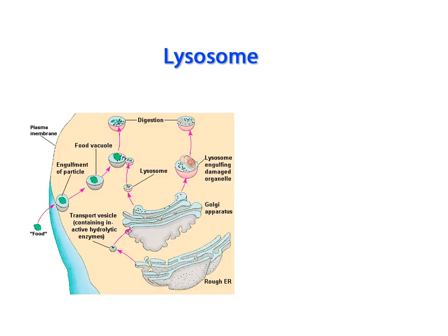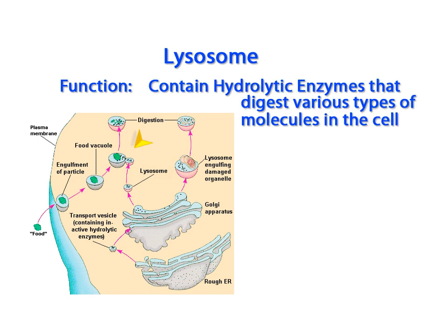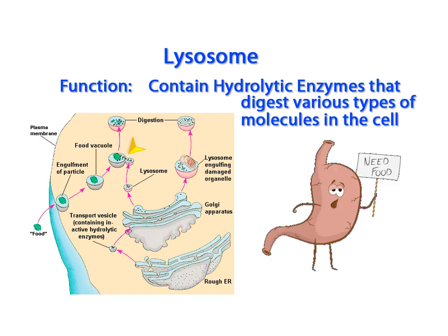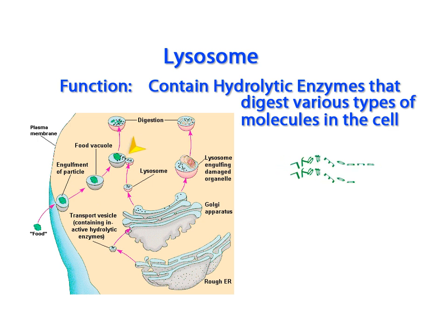If a vacuole is storing nutrients, it may fuse with an organelle called a lysosome, so the contents of the vacuole can be digested. Lysosomes are specialized organelles that contain hydrolytic enzymes that digest various types of molecules in the cell. Think of the lysosome like the stomach of the cell. Another cue is that the term 'lyses' means to break apart.